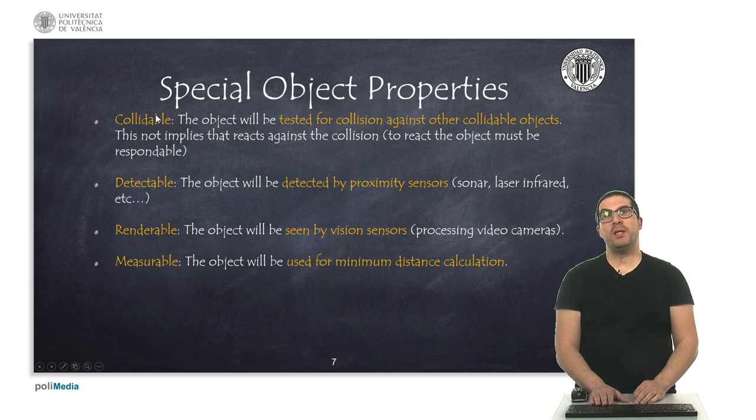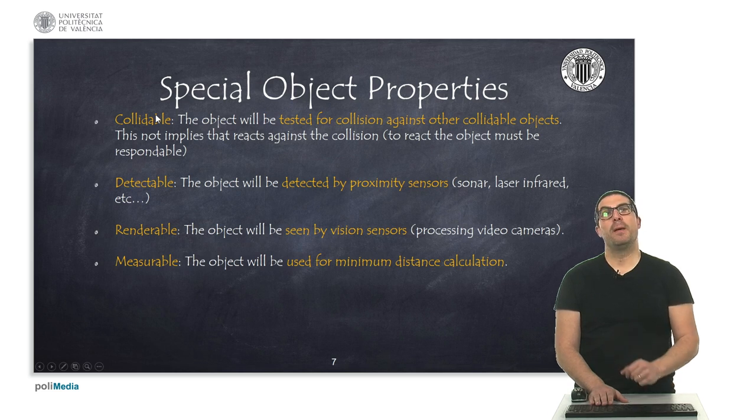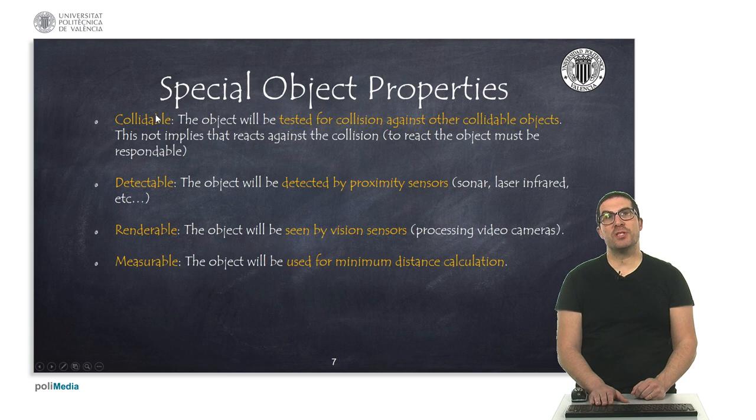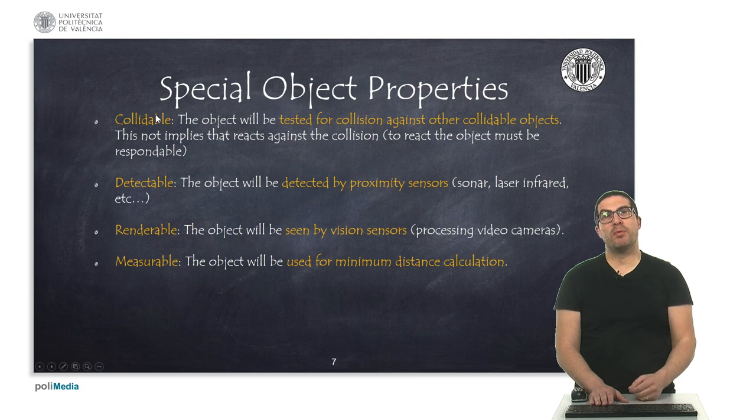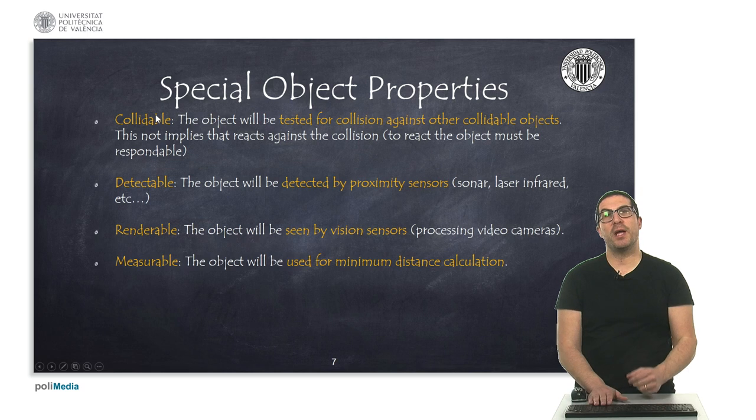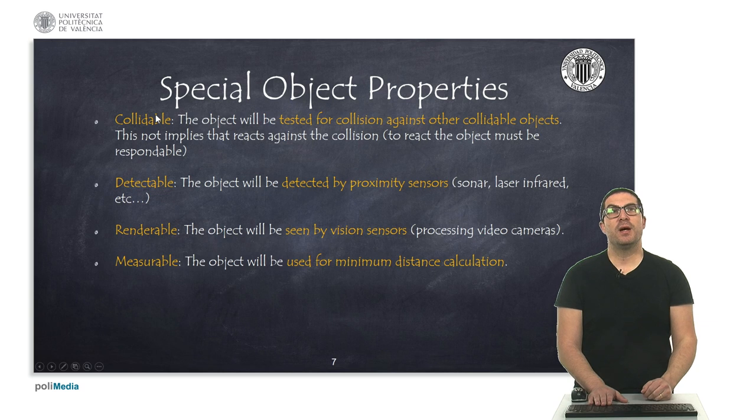So another property will be the renderable property, which means that these objects can be seen by vision sensors. So if you activate this property, then you have a camera in which you can do some processing, and only the objects with this property active will be actually rendered on that camera and then can be detected.